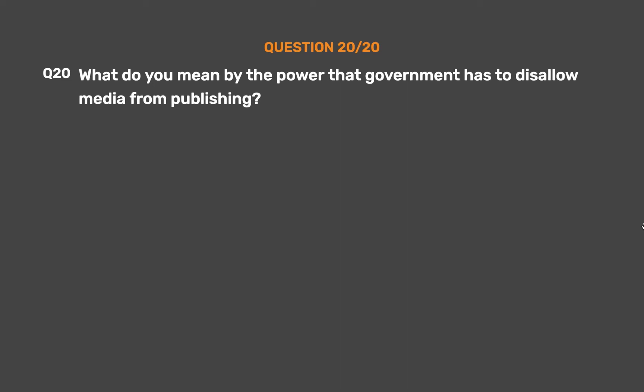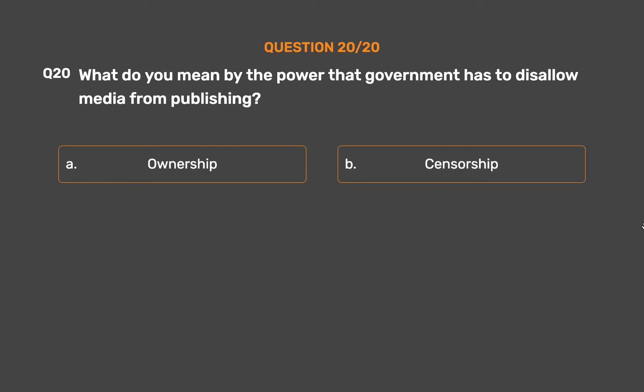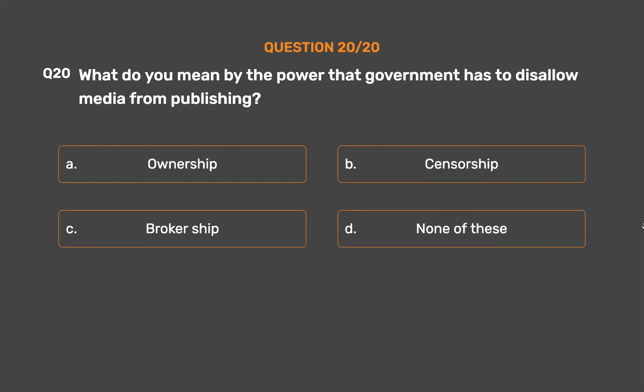Question number 20. What do you mean by the power that government has to disallow media from publishing? Option A: Ownership. Option B: Censorship. Option C: Brokership. Option D: None of these.